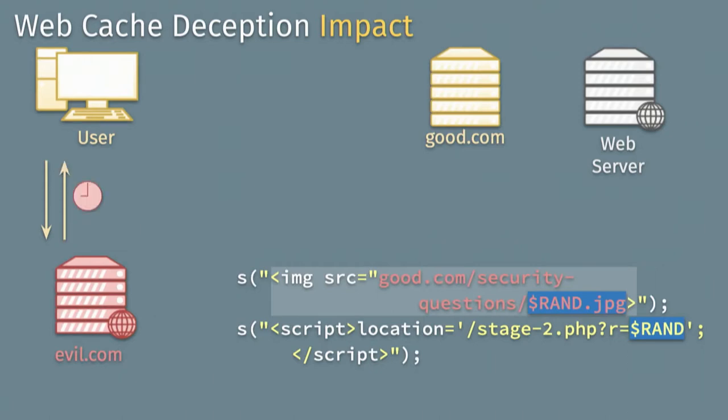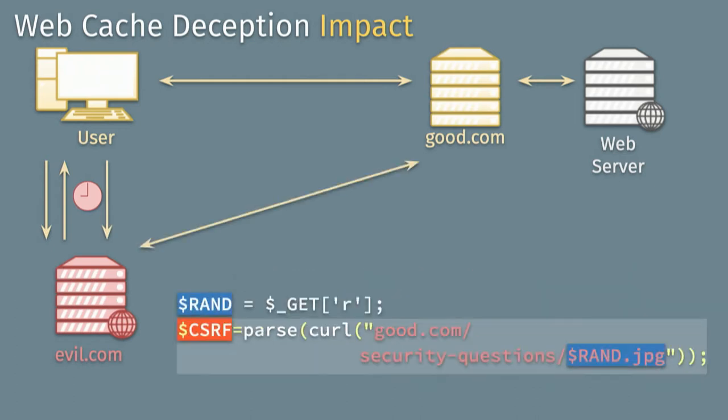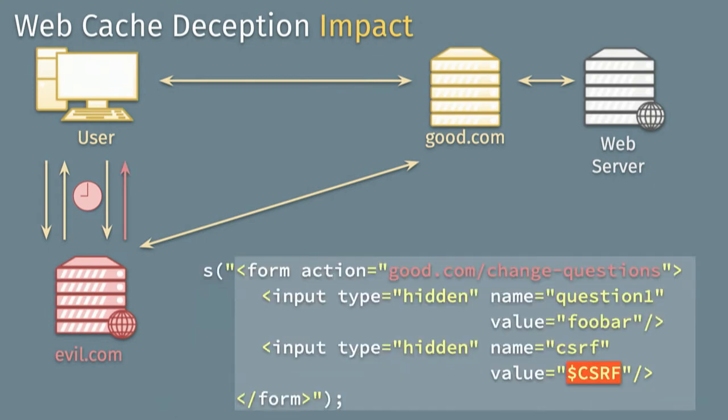In the attack flow: your evil.com forces the user to request the file triggering the web cache deception bug, the victim sends back the random identifier, you go fetch the CSRF token that got cached on the server, and then you send the actual CSRF attack forcing the browser to submit the form you want — changing security questions or similar. You couldn't do this from your own client because you're not logged in, you have no cookies, and there's no stateful session.